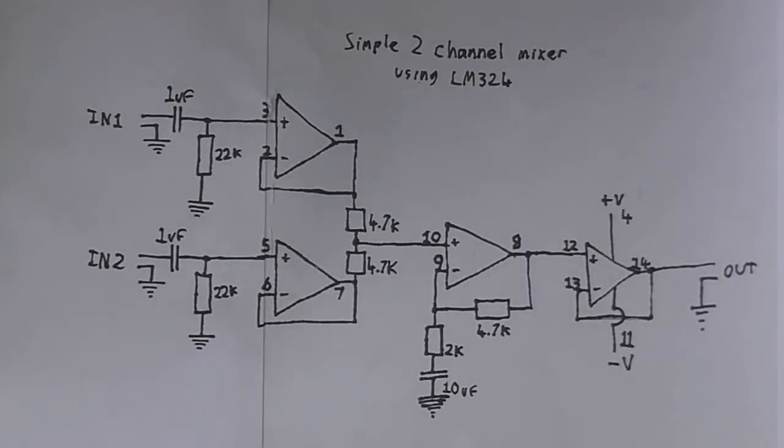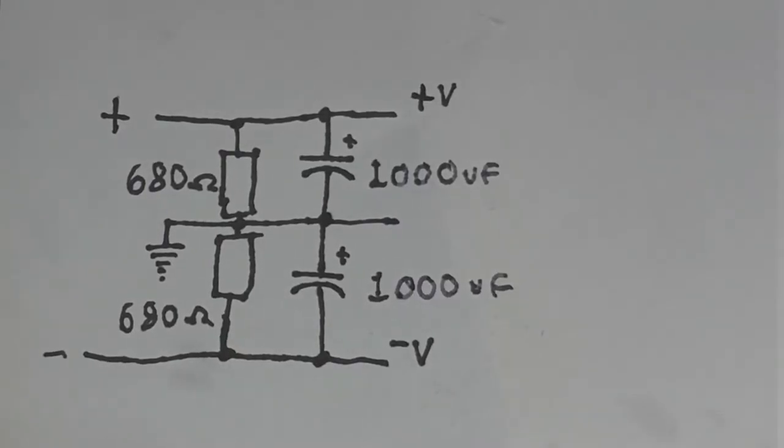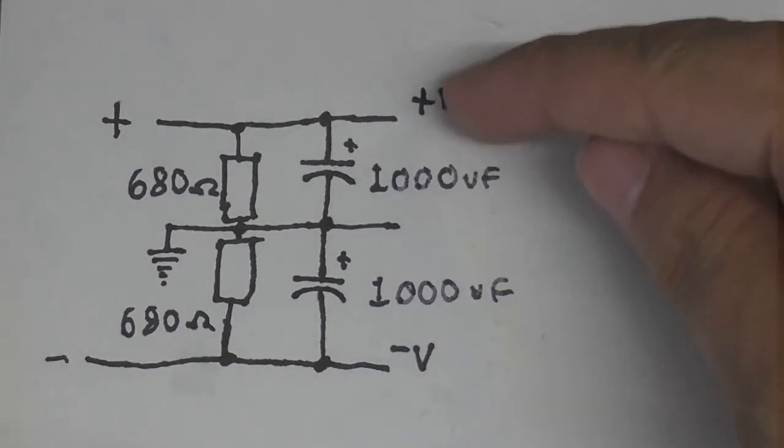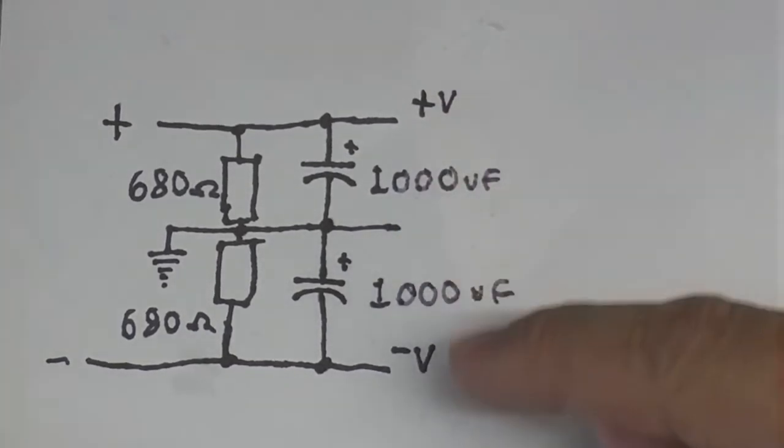And this is the final schematic. So, we have the mixer itself. Obviously, there's two of these circuits for stereo. And this, of course, is the circuit that splits the power from the power supply. So, we have a positive, a ground, and a negative.